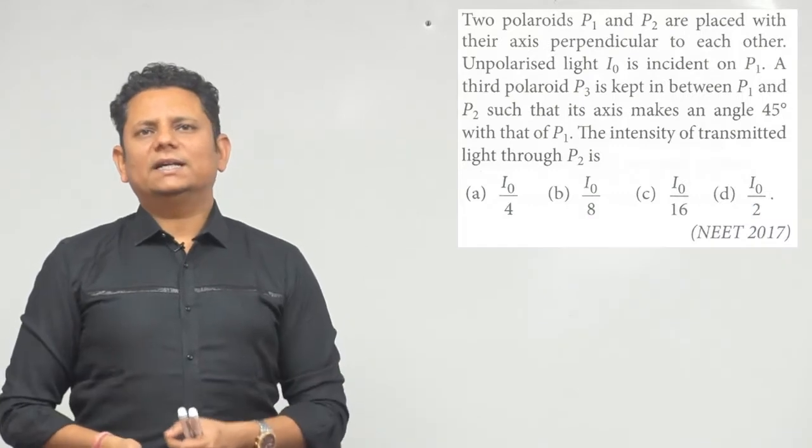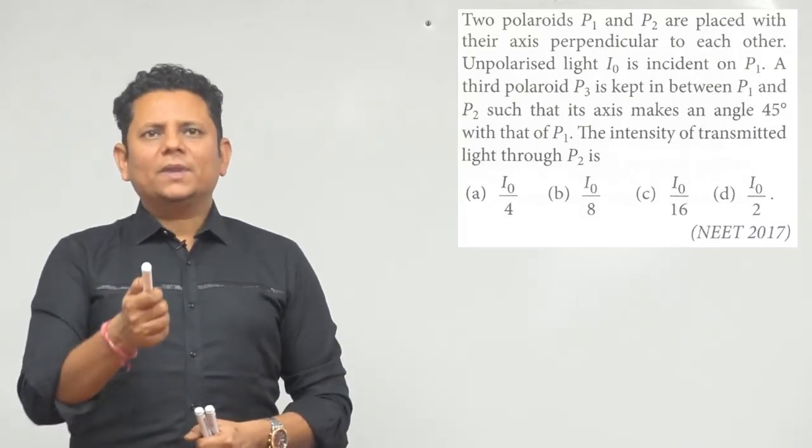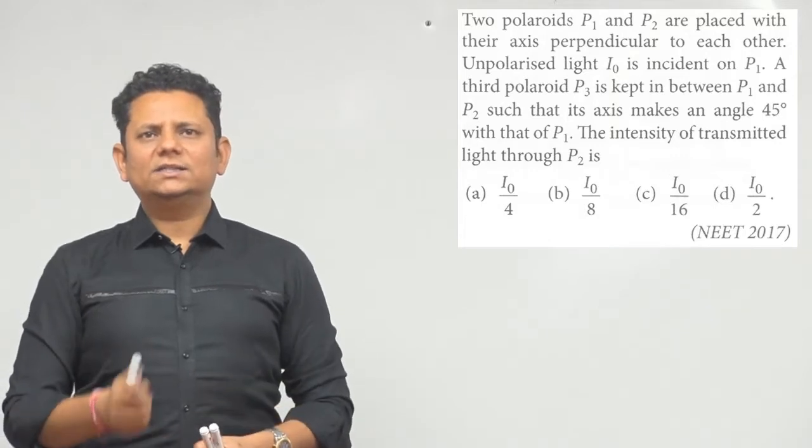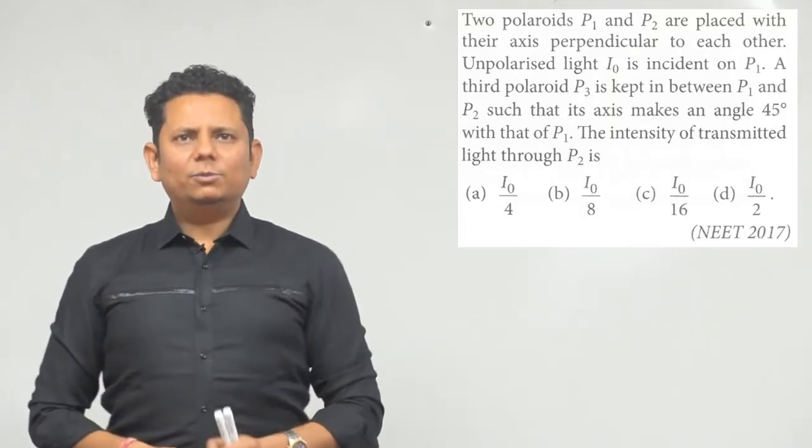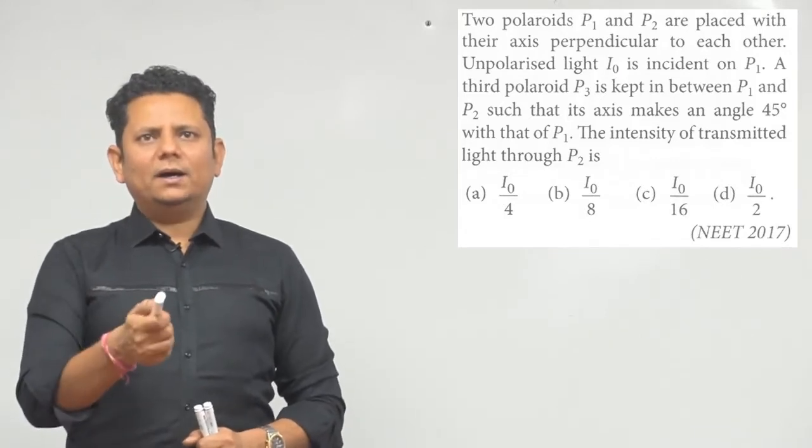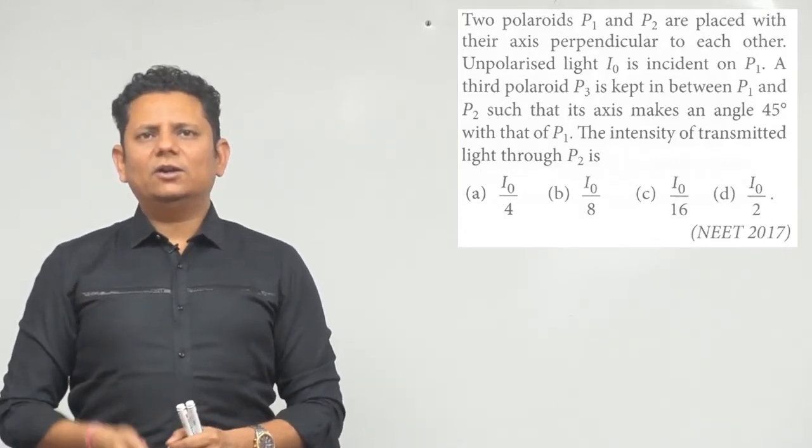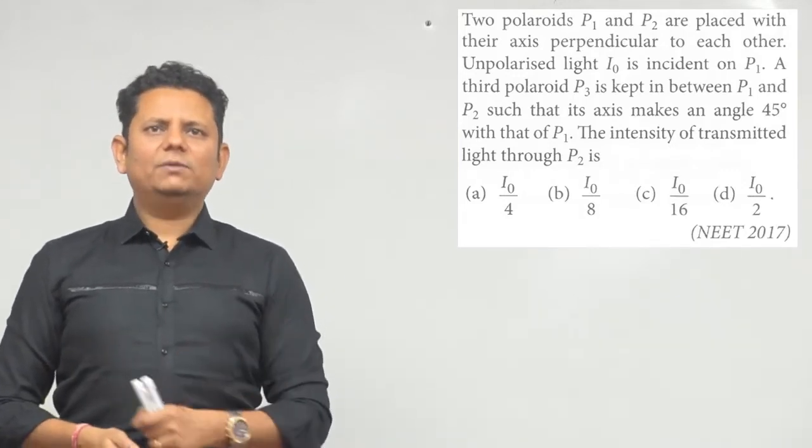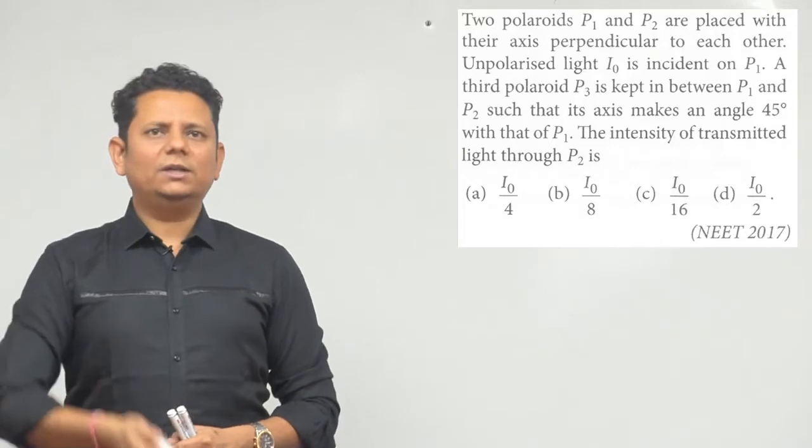Next question, 2017 ka sawal hai. Question says two polaroids P1 and P2 are placed with their axis perpendicular to each other. Unpolarized light I0 is incident on P1. A third polaroid P3 is kept in between P1 and P2, such that the axis makes an angle of 45 degree with P1. Intensity of the transmitted light through P2 kitni hogi?